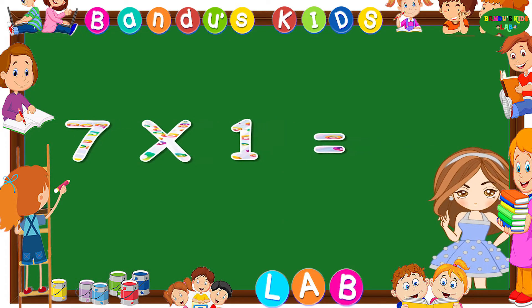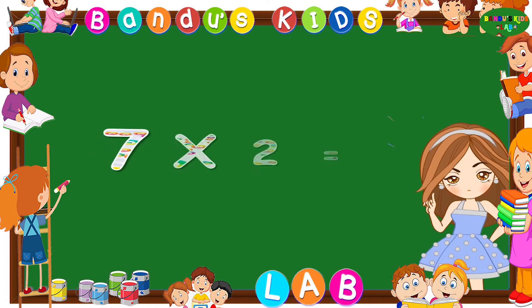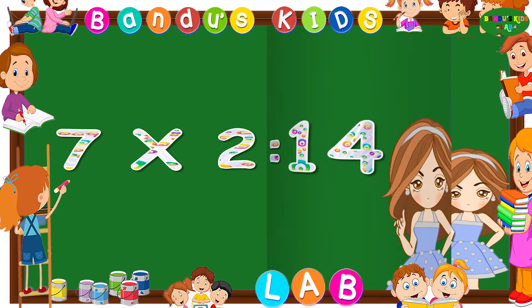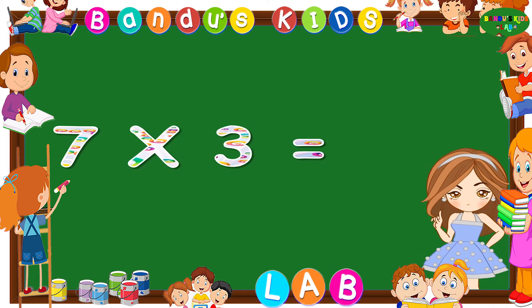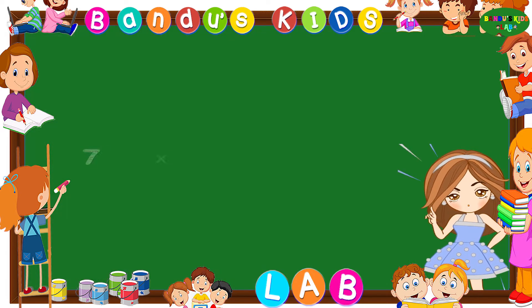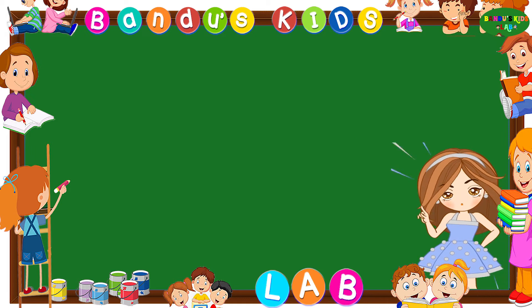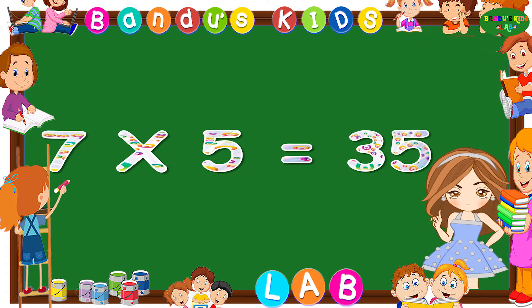Seven ones are seven. Seven twos are fourteen. Seven threes are twenty-one. Seven fours are twenty-eight. Seven fives are thirty-five.